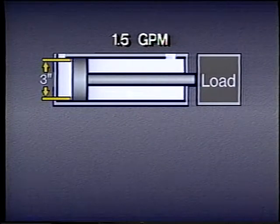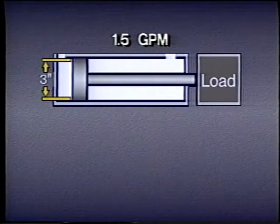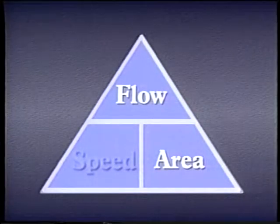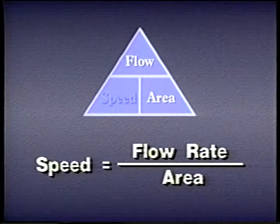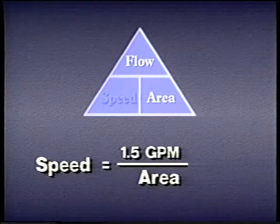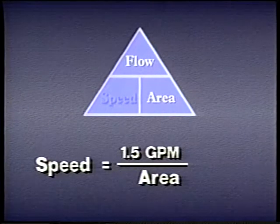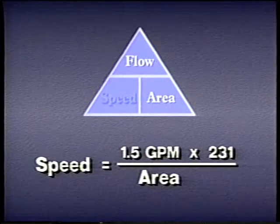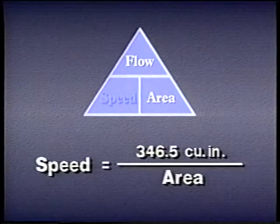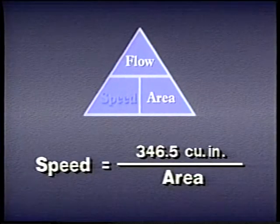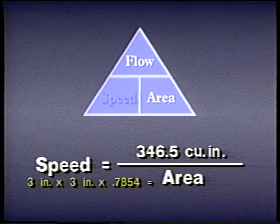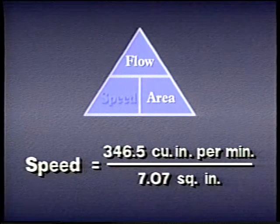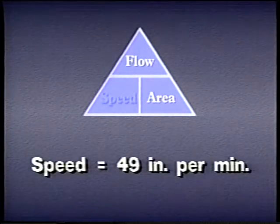Suppose you need to know how fast a piston will move if the bore of the cylinder is 3 inches and the flow rate is 1.5 gallons per minute. To determine speed, we divide the flow rate by the area of the piston. First, convert 1.5 GPM to cubic inches per minute by multiplying by 231, giving 346.5 cubic inches per minute. The area of the piston is 3 inches squared times 0.7854, or 7.07 square inches. Dividing 346.5 by 7.07 gives the answer: 49 inches per minute.